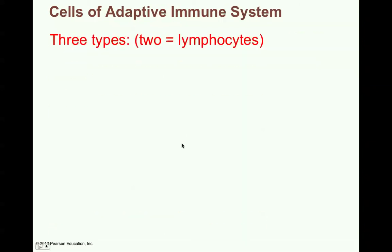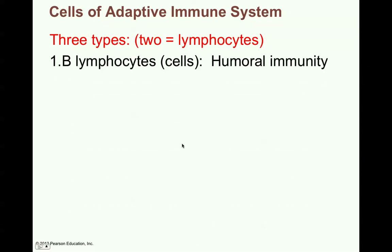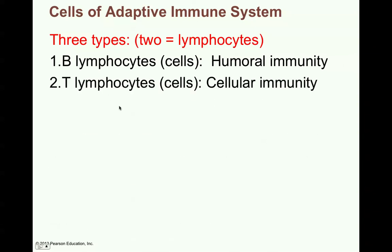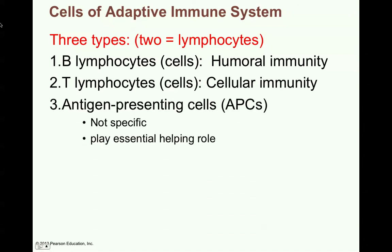Cells of the adaptive immune system — there are three types. Two of them are your lymphocytes: the B lymphocytes or B cells that form humoral or antibody-mediated immunity, and T lymphocytes or T cells that form cellular immunity. Then there's another type of cell called an antigen-presenting cell or APC. These are not specific, but they play an essential helping role to help cells recognize antigens and form a specific response to neutralize the antigen on that foreign invader.